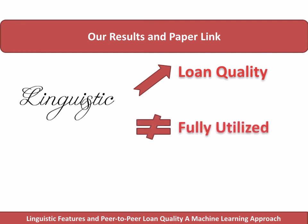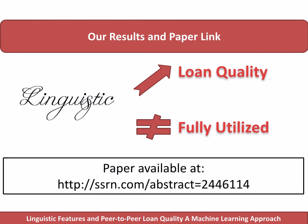In particular, some features that are well-established as deception cues are still able to manipulate investors, but loans richer in those features are indeed more likely to default. Our full paper is available at the link below. Thank you.